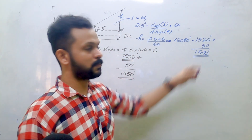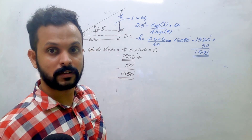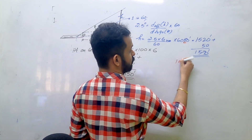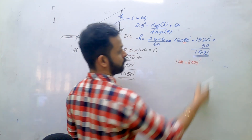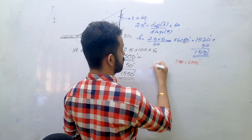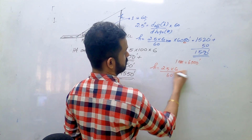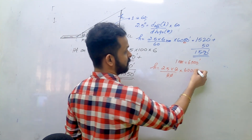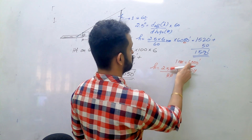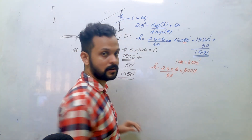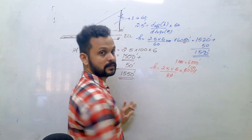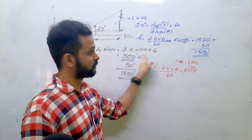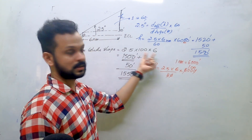As discussed in the theory of 1/60, to make calculations easier we assume one nautical mile equals 6000 feet rather than 6080. So height equals 2.5 into 6 divided by 60 into 6000. The 6 and 6000 cancel with the 60, leaving a factor of 100. So it becomes 2.5 into 6 into 100 — that's exactly where the multiplication by 100 comes from.